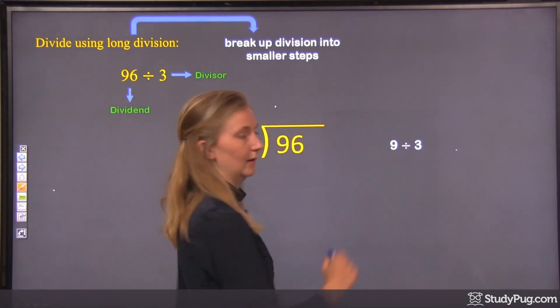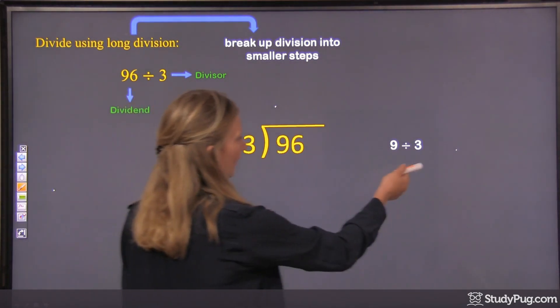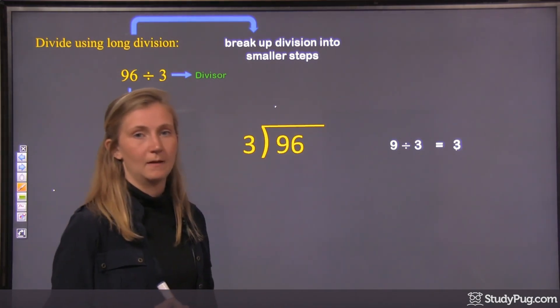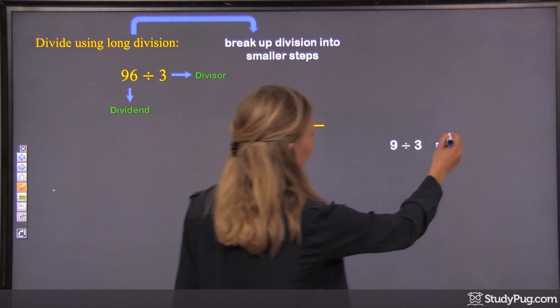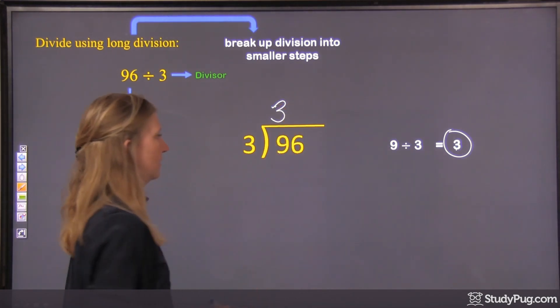All right? So 9 divided by 3, well, that's an easy one, right? That's one that you hopefully have in your head. 9 divided by 3 is 3. Okay? And we take this 3.